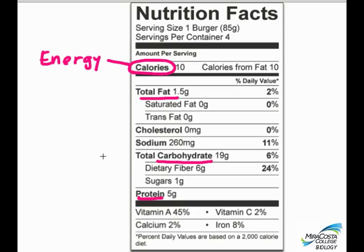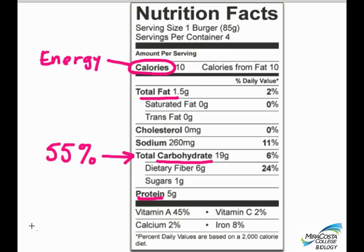In the human diet, carbs account for the majority of caloric intake, around 55% more or less depending on your dietary habits. This varies greatly in different parts of the world. In Northern Africa, for example, carbohydrates account for something like 75% or more of a typical person's daily caloric intake, whereas in the Arctic Circle, indigenous people have historically persisted for long periods of time with no carbs whatsoever.